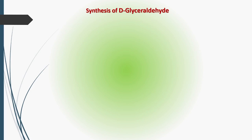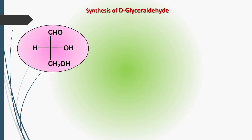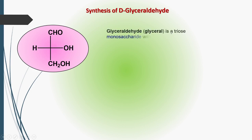The structure for D-glyceraldehyde has three carbon atoms, six hydrogens, and three oxygen atoms. Here the OH is on the right-hand side, therefore the configuration is D-configuration. This is the structure for D-glyceraldehyde.